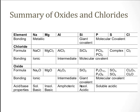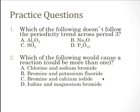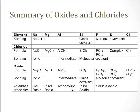There's a useful summary table of oxides and chlorides covering the bonding as an element, the bonding type as a chloride, the bonding as an oxide, and the acid and base properties. This table is something you should probably commit to memory.